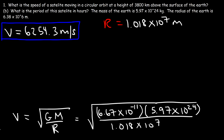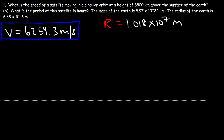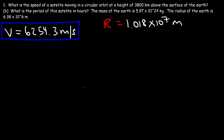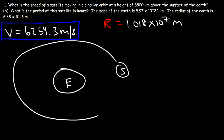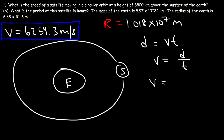Now that we have this speed, what is the period of the satellite in hours? To calculate the period, consider the satellite travelling around the Earth at constant speed. Whenever you have an object moving at constant speed you can use d equals vt, so v equals d over t. The distance around the circle is the circumference, which is 2πR, and the time it takes to complete one revolution is the period.